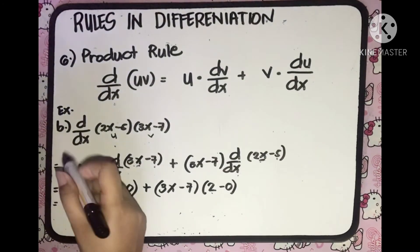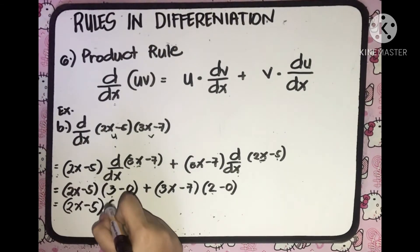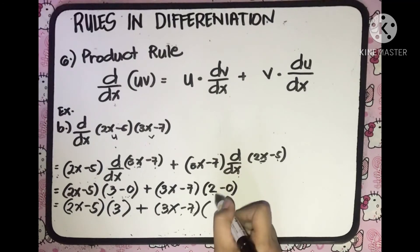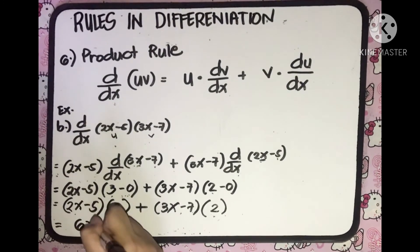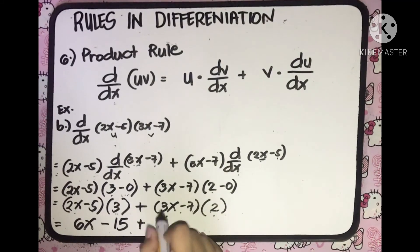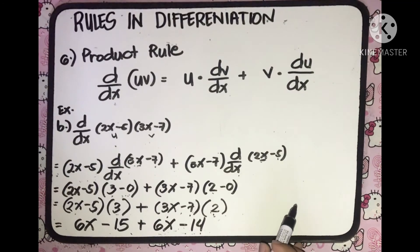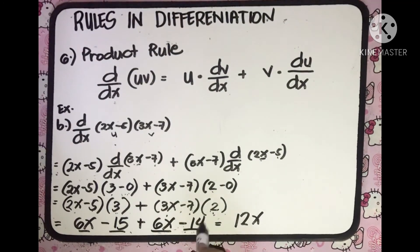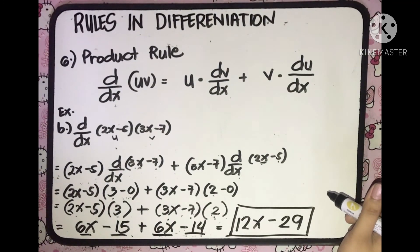Simplifying: we have 2x minus 5, and 3 minus 0 equals 3. Plus 3x minus 7, and 2 minus 0 equals 2. Distributing: 3 times 2x equals 6x, 3 times negative 5 equals negative 15, plus 2 times 3x equals 6x, and 2 times negative 7 equals negative 14. Combining like terms: 6x plus 6x equals 12x, and negative 15 minus 14 equals negative 29. The derivative of the given function is 12x minus 29.